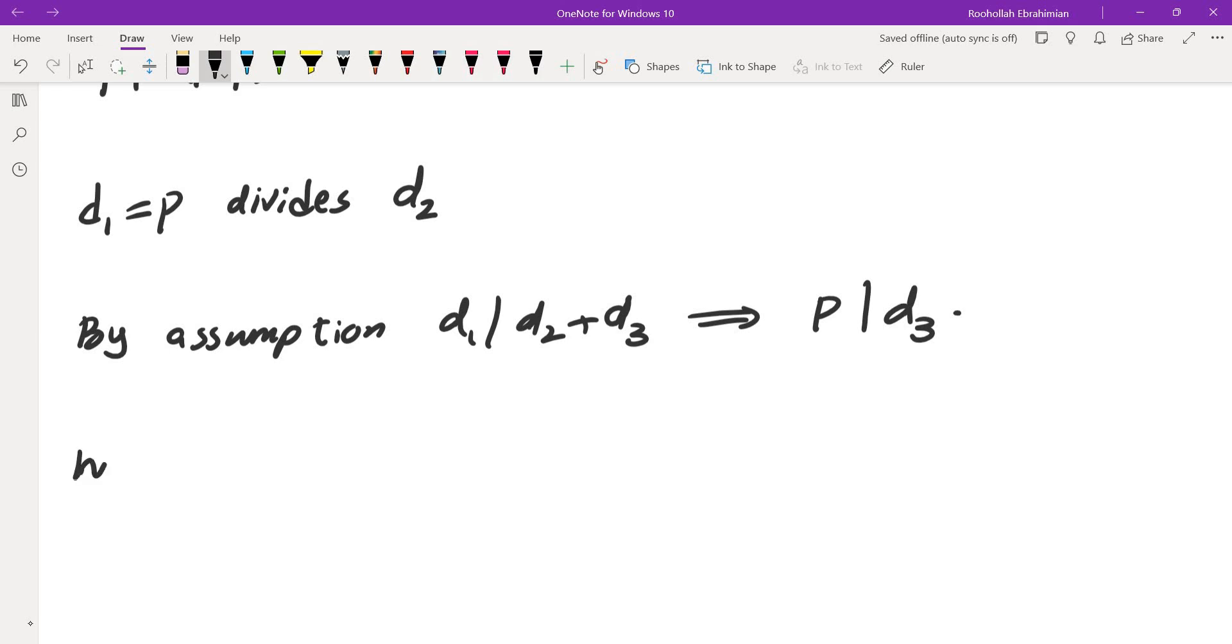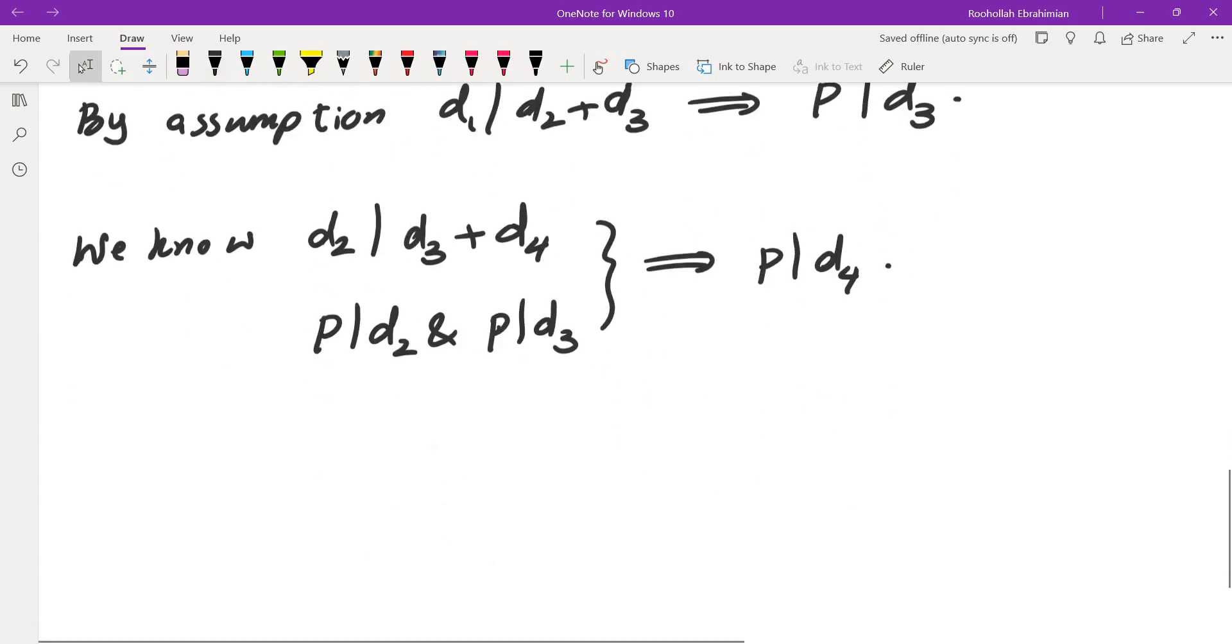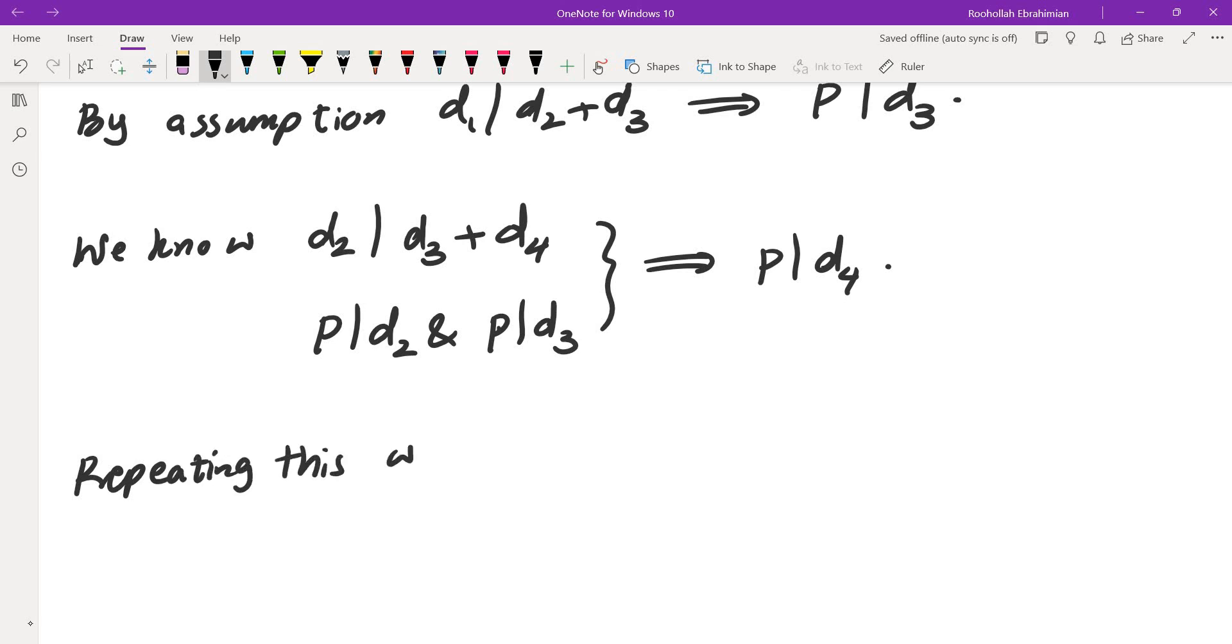So now we know that d₂ divides d₃ plus d₄. But p divides d₂ and p divides d₃. So this tells us that p must divide d₄. And then repeating this, we will see p divides dⱼ for all j.